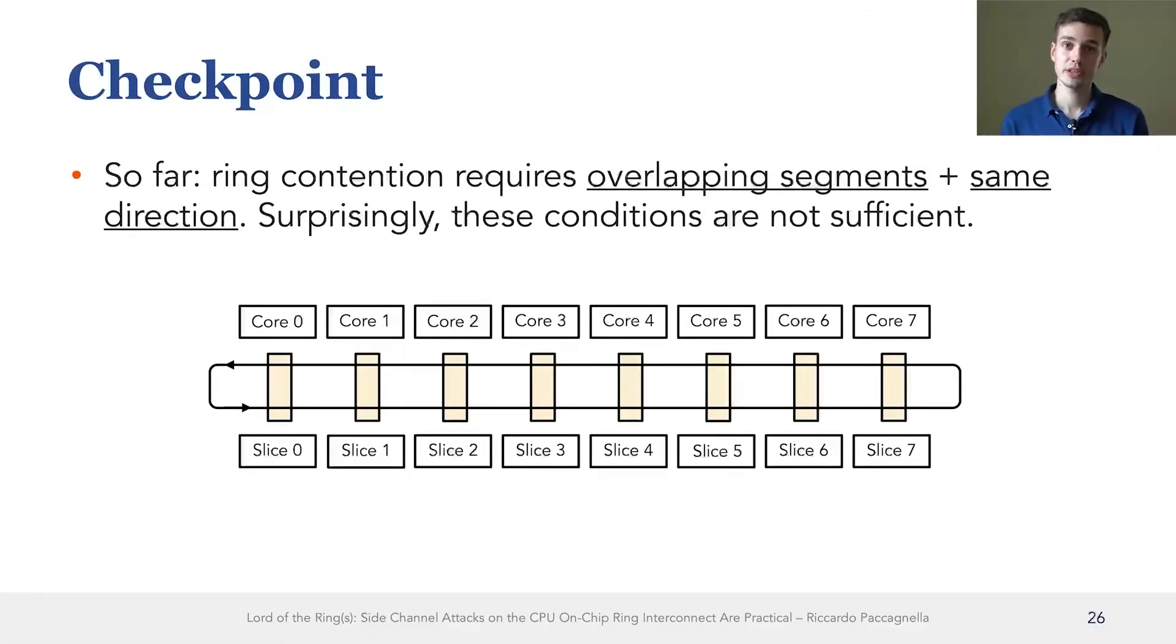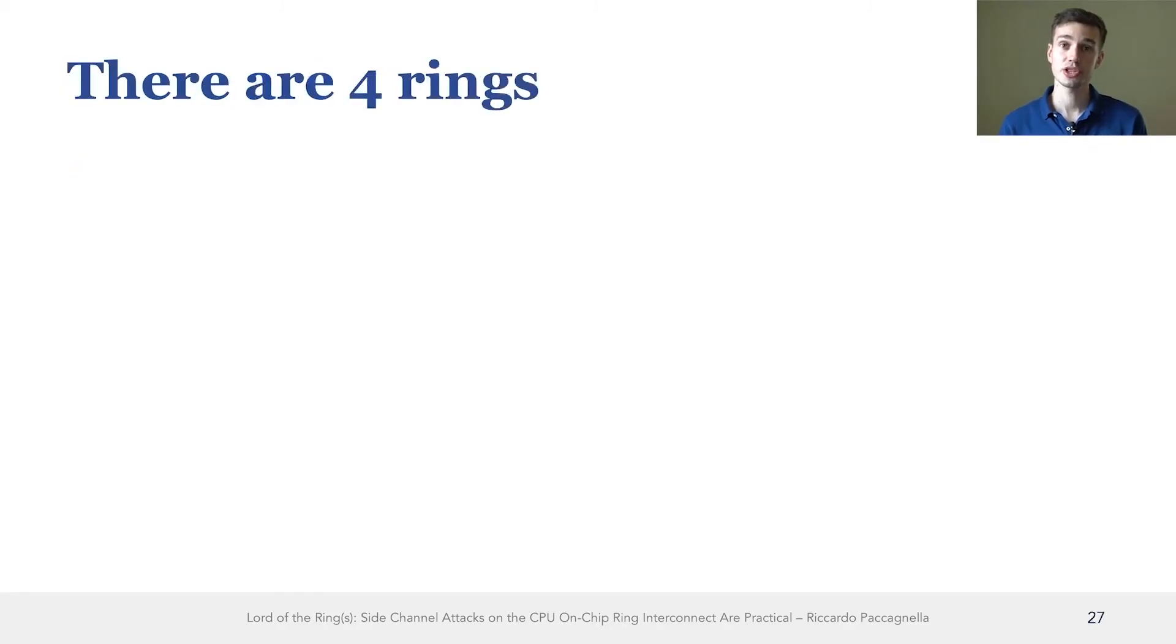So far, we saw that for the sender and the receiver to contend on the ring interconnect, their traffic needs to travel in the same direction and on overlapping segments. Surprisingly, however, these conditions are not enough. So in the next few slides, I will describe the additional necessary conditions to observe contention on the ring interconnect. Before I tell you these conditions, I need to tell you a bit more about how the ring interconnect is implemented.